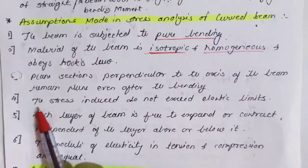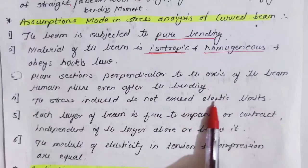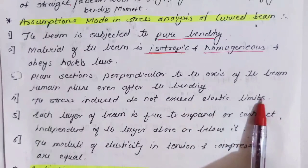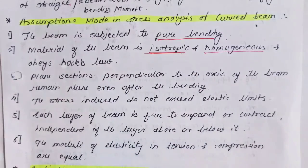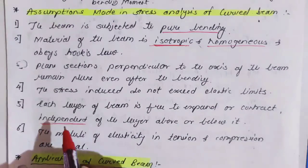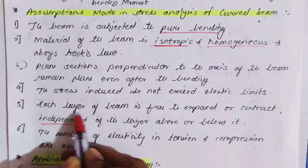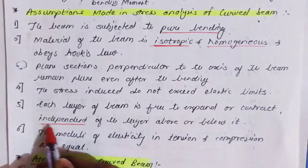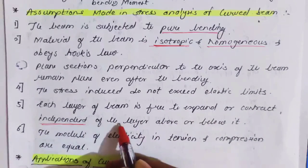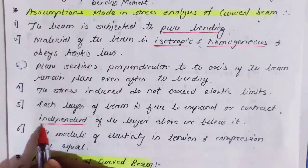Another assumption is that the stress induced does not exceed the elastic limit, which is again Hooke's law. The next assumption is that each layer of the beam is free to expand or contract independently of the layer above or below it.